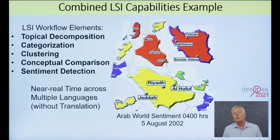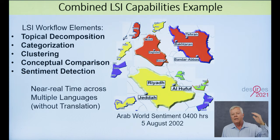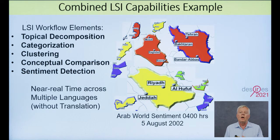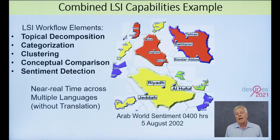Another thing we did along the way was combine more and more capabilities that LSI could have. For example, we had an application where we were ingesting hundreds of thousands of news items around the world every day, and we were going through a workflow involving topical decomposition, categorization, clustering, conceptual comparison to the user's interests, and sentiment detection in multiple languages in near real time, producing maps. Users could click down to the source for any information they found in the map. We also found we could use LSI to monitor and control the workflow based on thresholds in the LSI space. And in this particular application, like many of the better ones we made, users made very few ad hoc queries — it was usually much more efficient to help them move through material by following threads of entities or locations.